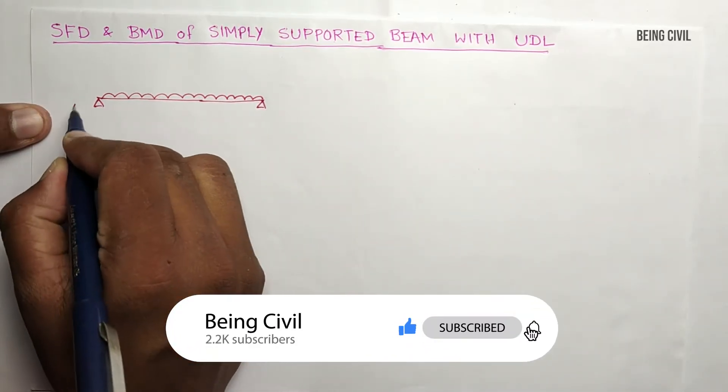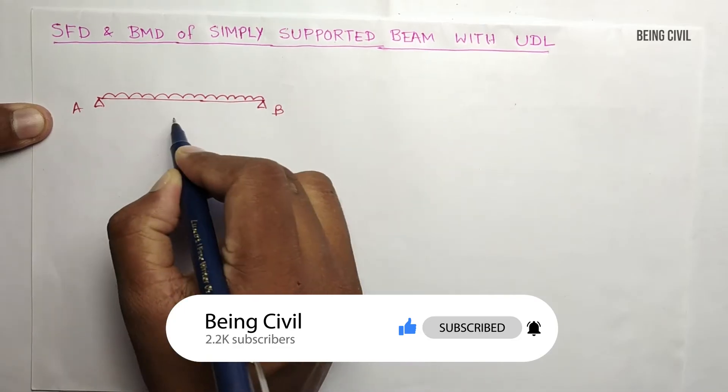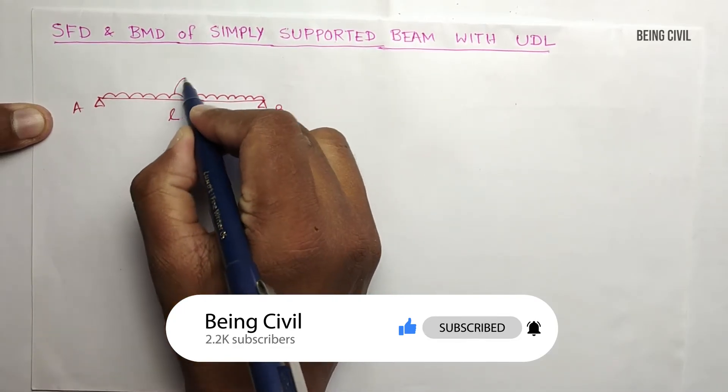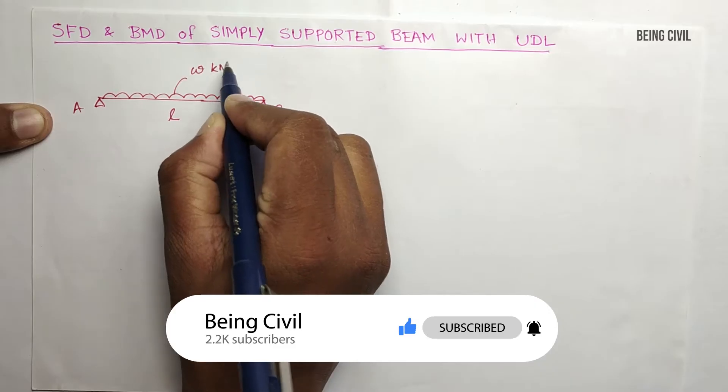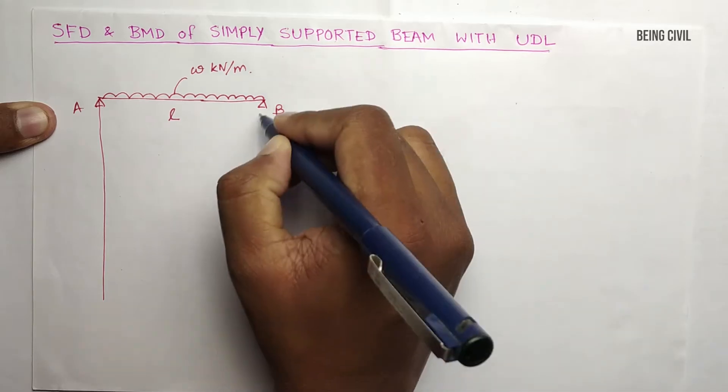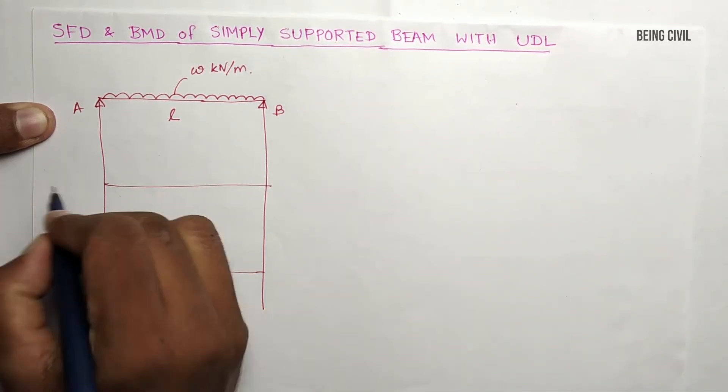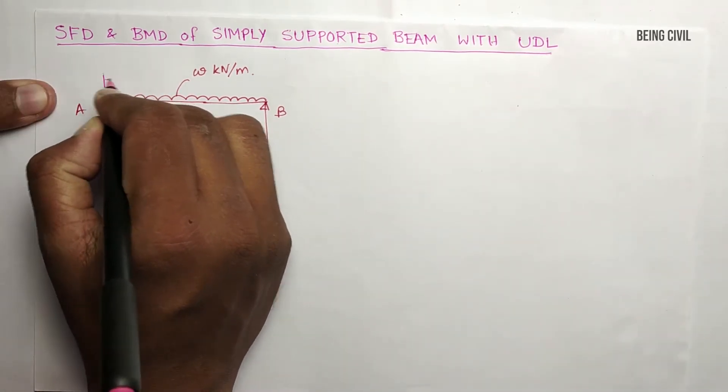So this is our beam AB of length L, subjected to a uniformly distributed load of W kN per meter. We will draw the shear force and bending moment diagram of this beam. We will take a section at a distance of X from the left side of the beam and calculate the shear force and bending moment at this section.